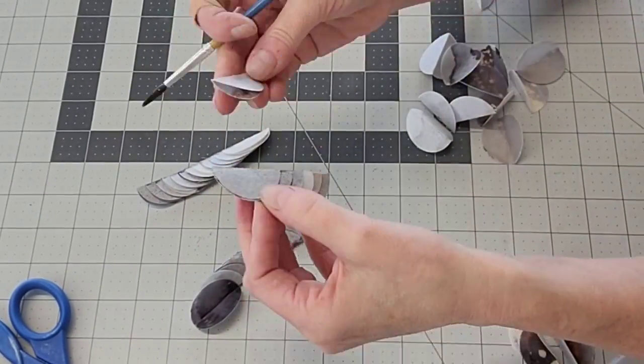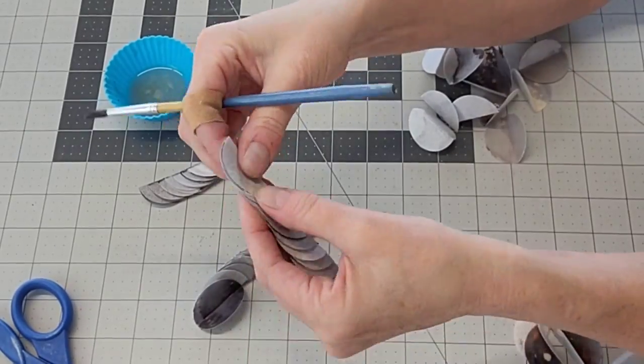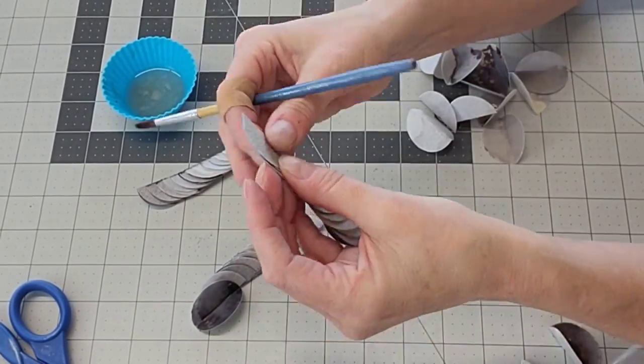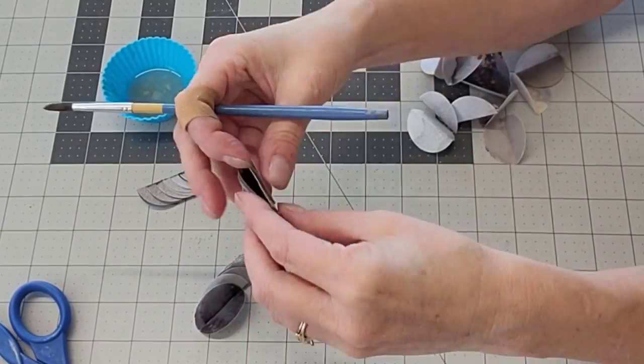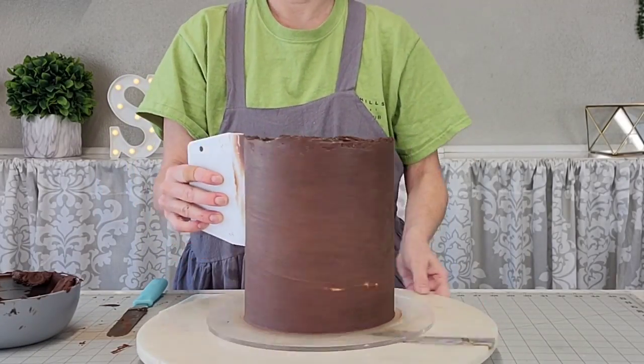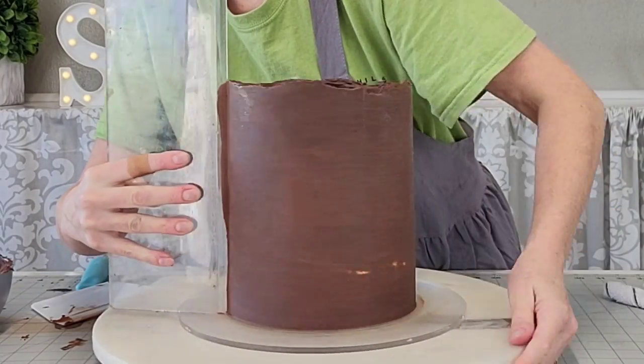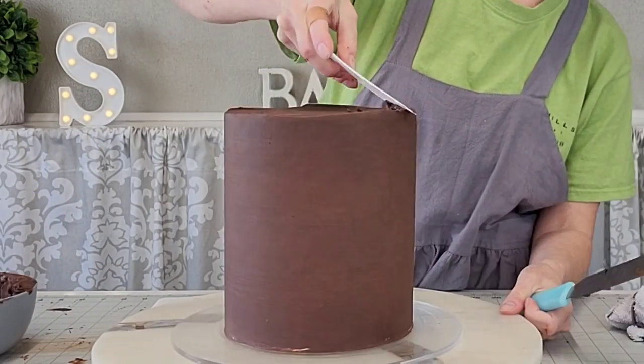Now I also did the opposite direction because the way we're going to assemble these - I'm going to call them leaves, they look like leaves to me - you have to have a mirror image. So do the same amount of half circles the opposite direction and set those aside to dry. It doesn't take long, maybe half an hour, 45 minutes for those to dry before you can assemble them.